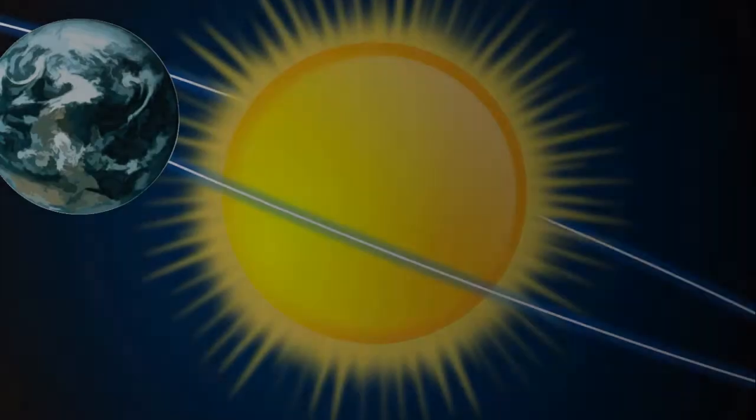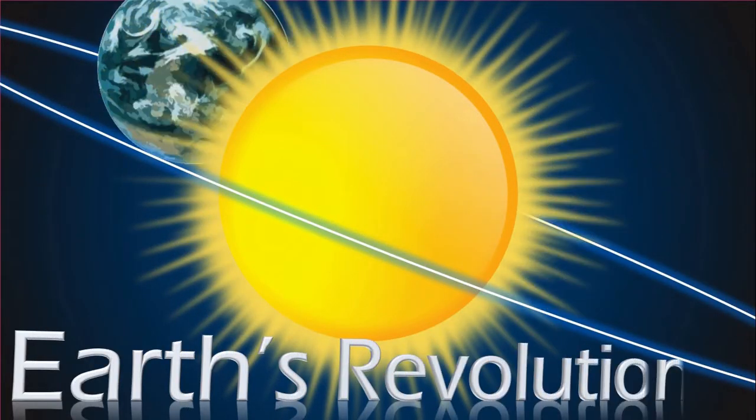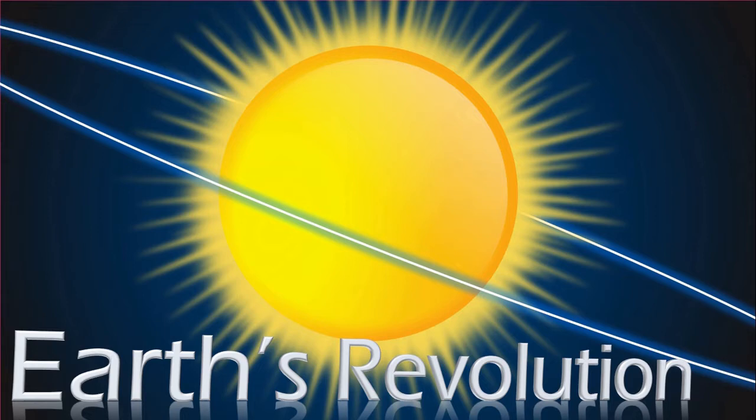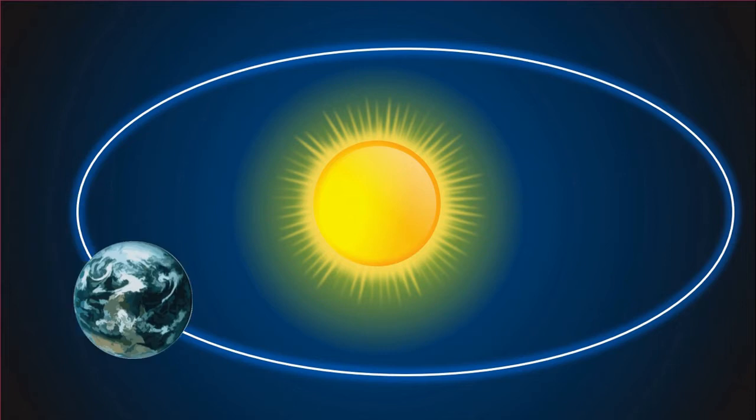Let us review the process of revolution of Earth around the Sun. The Earth completes one orbit around the Sun in about 365 days. Earth's orbit around the Sun is not circular but elliptical.